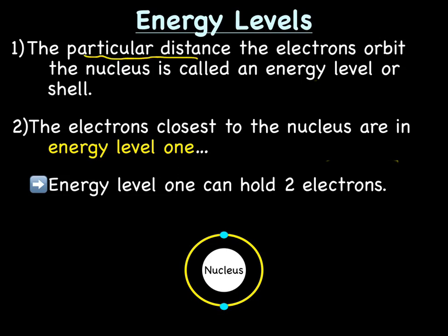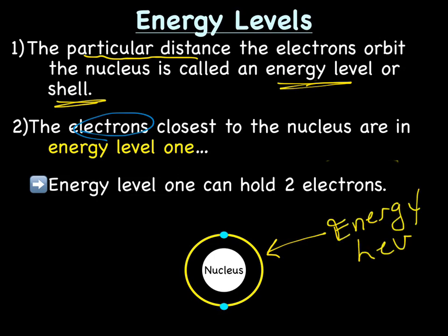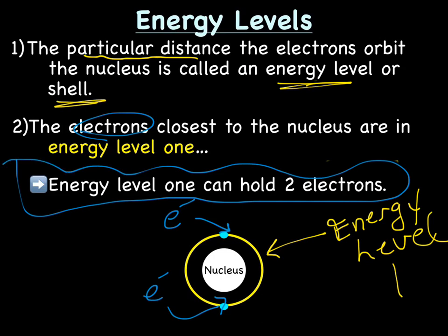Energy levels. That particular distance the electrons orbit from the nucleus is called an energy level or a shell. The electrons, which in our diagram are labeled as blue dots, closest to the nucleus are in what we call energy level 1. The white in the middle is labeled as the nucleus. The yellow ring here is energy level 1. And those are the electrons. Important, very important: energy level 1 can hold two electrons.